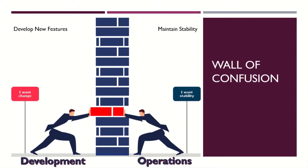This image represents the wall of confusion. On one end of the wall, we have the development team that consists of developers and testers — that's the left side of the wall. On the right side, we have the operations teams. In non-DevOps organizations, development and operation teams sit in different silos, which is nothing but a wall in between the two parties, similar to what you see in the image.